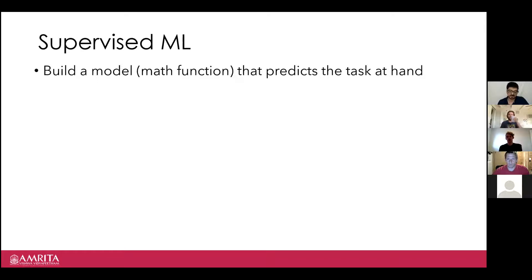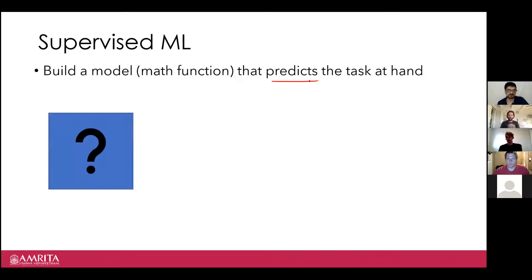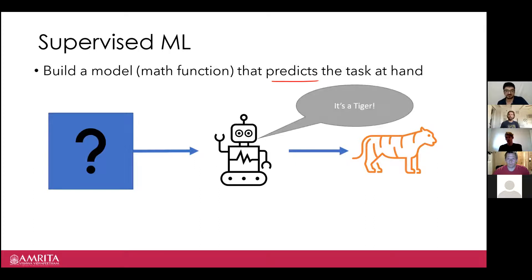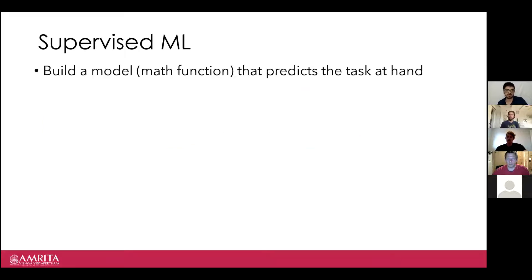You build a model, which is really just a math function that predicts the task. You have something, you stick it in your machine learning model, and it says it's a tiger. You can do this with your phone — Google Translate, Google Lens, optical character recognition. You can point your phone at text in another language and it automatically translates it. Google Translate is all machine learning. Ad placement is machine learning. It's everywhere.